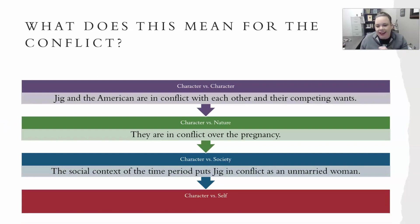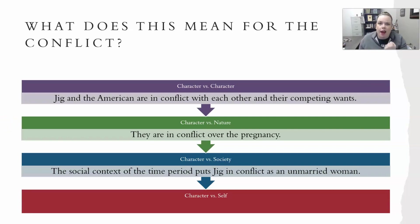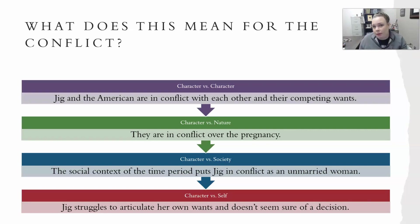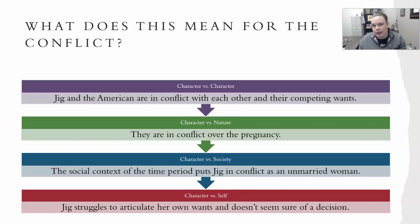Are there any conflicts of character versus self? Most specifically with Jig — she struggles to articulate what she wants to the American, and she doesn't seem sure of her decision. She goes back and forth: 'I'll do it if you want me to,' 'I feel fine,' and 'we can't have everything.' She seems to realize things aren't going to get better or that the procedure won't solve their problems. So she is in conflict with herself about what she wants and what she wants to do.